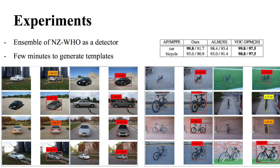For sanity check, we run our ensemble of NZ-WHO templates as a detector and measured its detection performance on 3D object dataset. We generated NZ-WHO templates for car and bicycle classes and the process took few minutes to generate a large collection of templates. The ensemble of NZ-WHO templates performs slightly worse than state-of-the-art detectors but gives accurate 2D-3D registration.